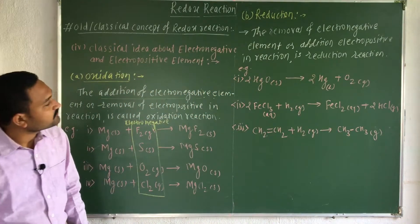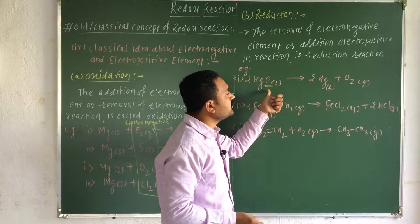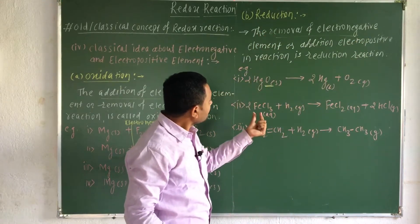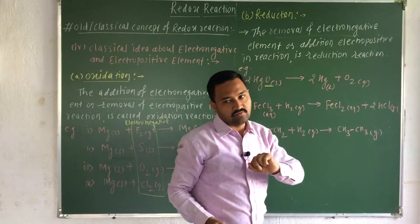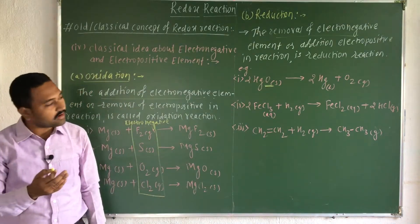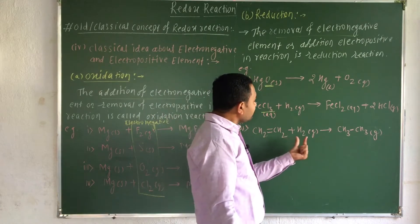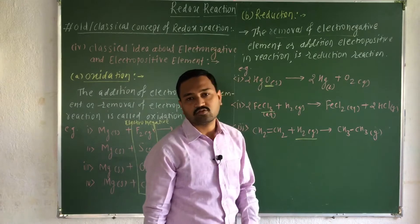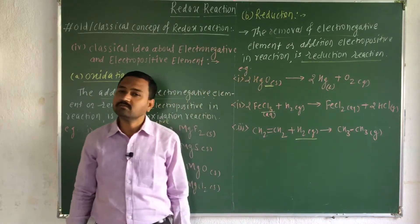Third example: CH₂=CH₂ + H₂(g) → CH₃CH₃. In all these examples, there is a removal of electronegative element oxygen, hence this process is reduction. In the second example, chlorine is removed and FeCl₃ (ferric chloride) is converted to FeCl₂ (ferrous chloride) — again removal of an electronegative element. In the third example, hydrogen (electropositive element) is added across the double bond.